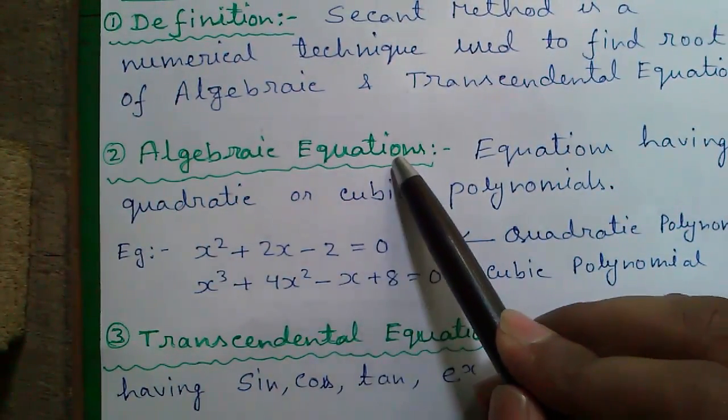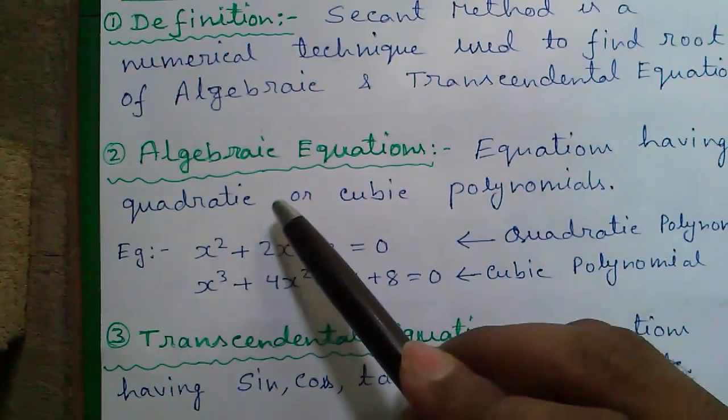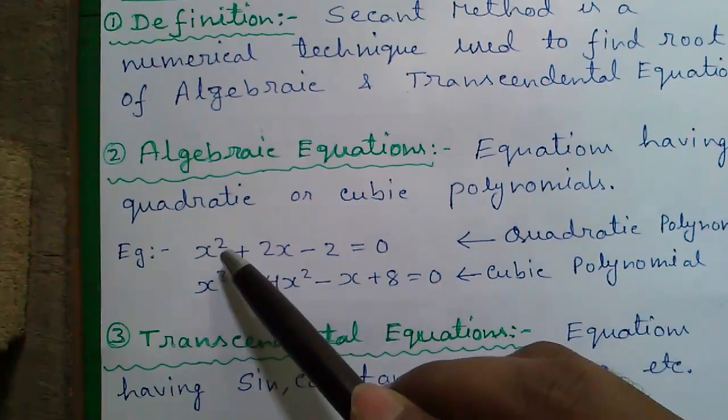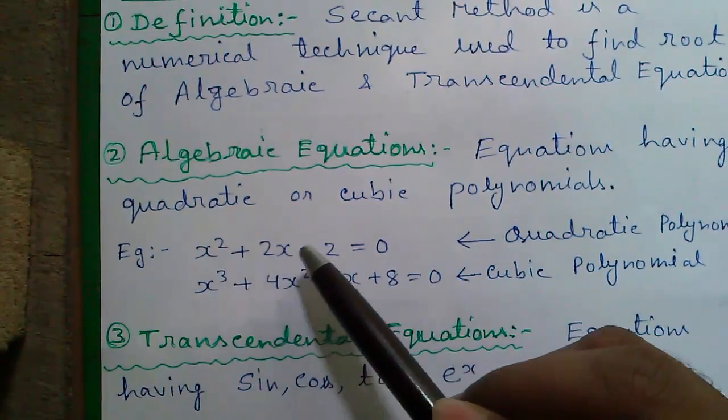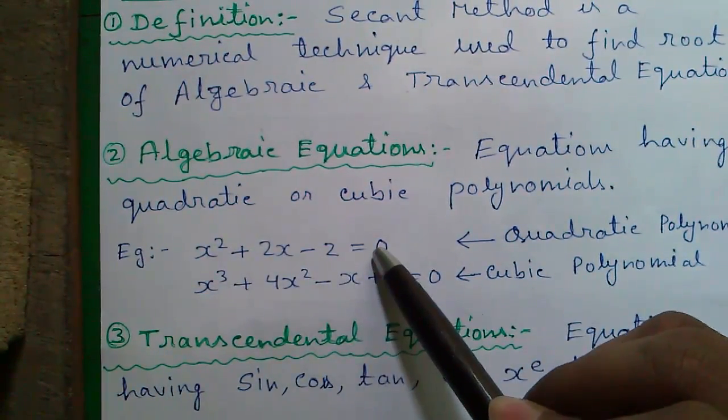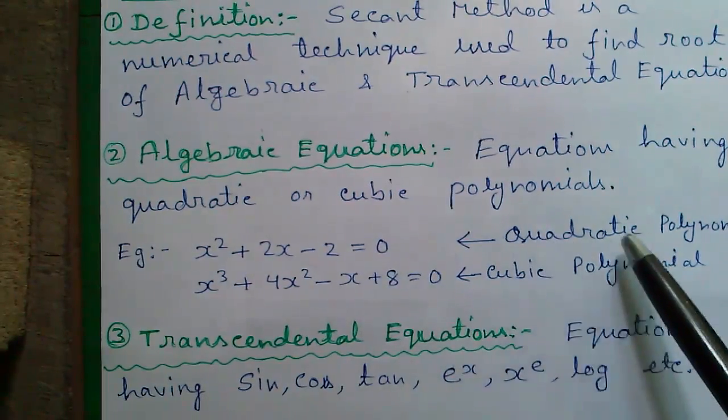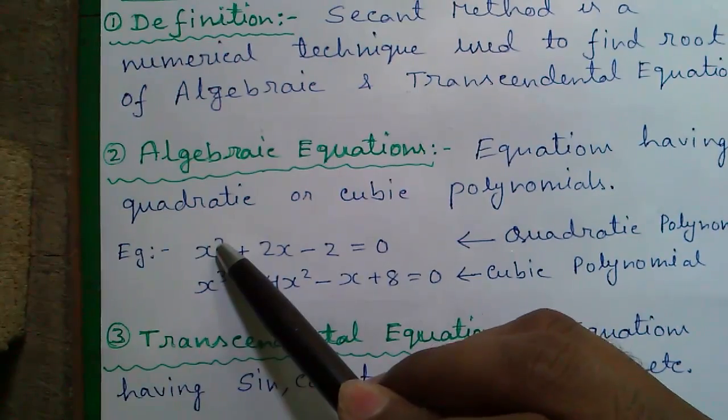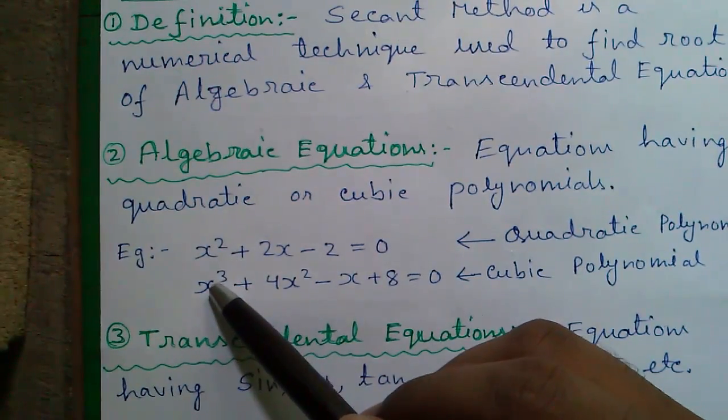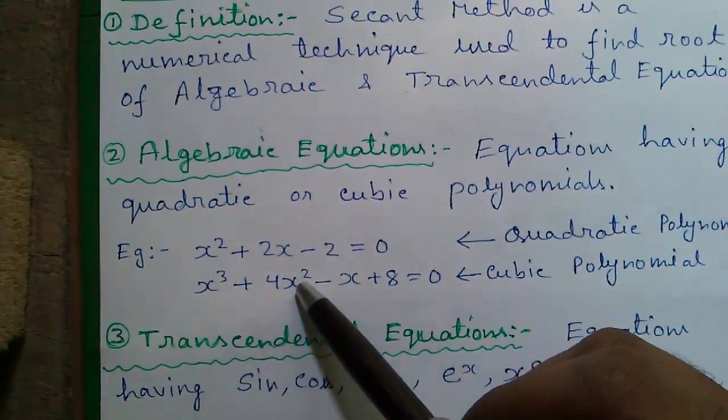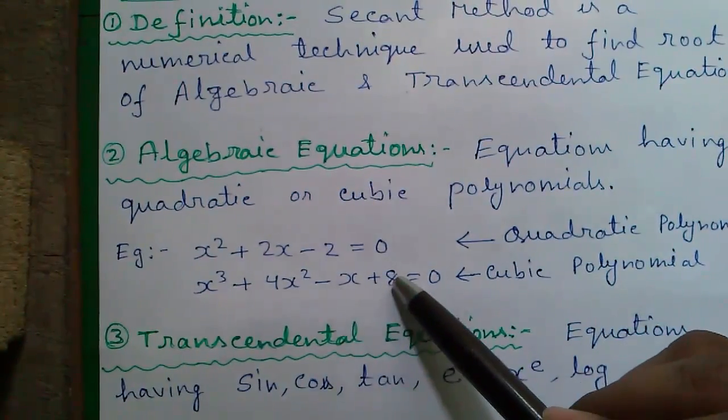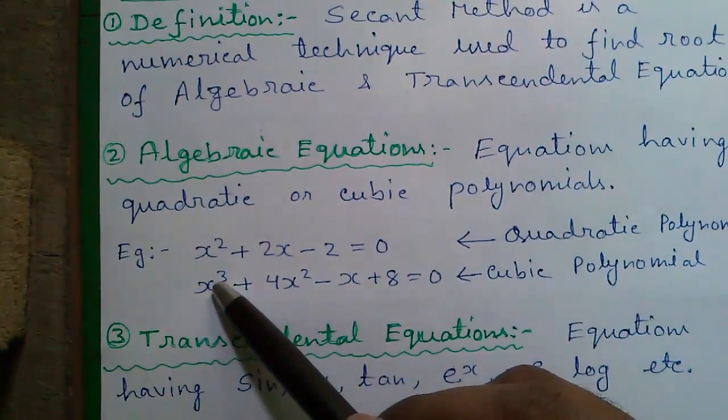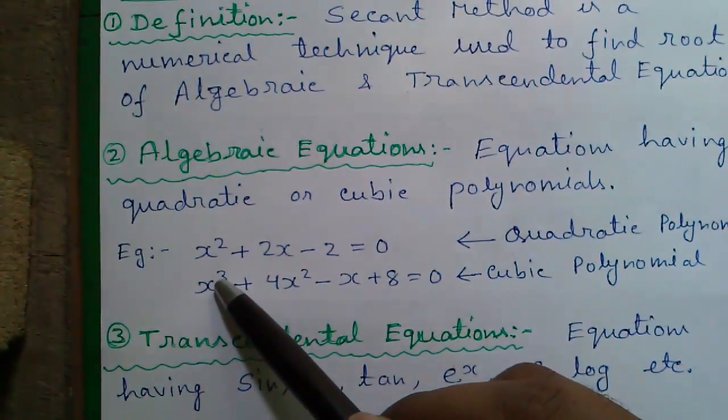Number two, algebraic equations. Equations having quadratic or cubic polynomials are called the algebraic equations. For example, x² + 2x - 2 = 0 is an example of quadratic polynomial, because it has power in 2 or square. And second is x³ + 4x² - x + 8 = 0 is an example of cubic polynomial having power as 3.